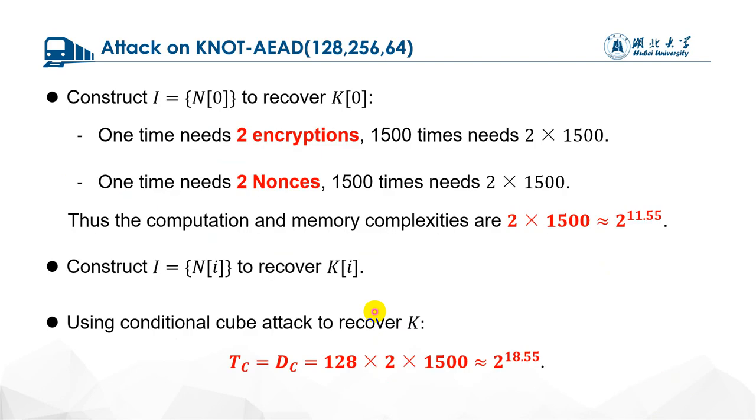Now we discuss the complexity to recover K[0]. Computing one time cube sum needs 2 encryptions and 2 nonces. Thus, the computation and data complexities both are 2×1500. Because the linear layer of KNOT-b is word-based rotation, therefore it has a translation invariant property. So we can construct the cube set including N_i to recover the k bits K_i. As a result, we can recover all the 128 k bits with this complexity.